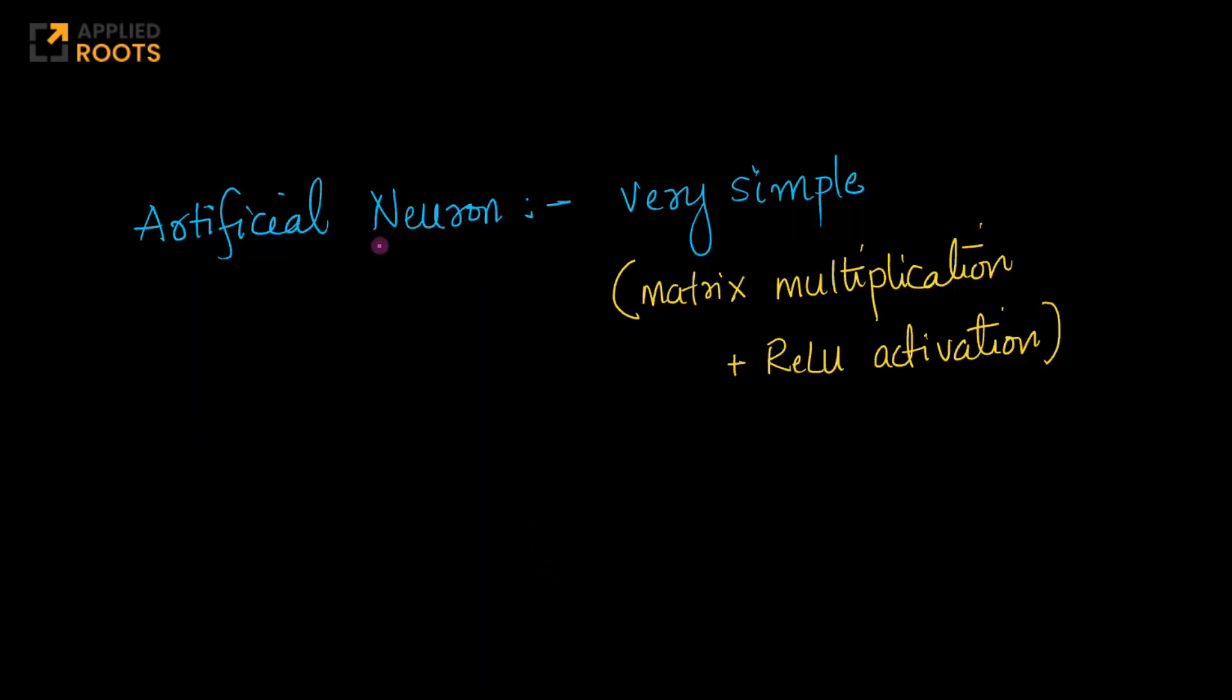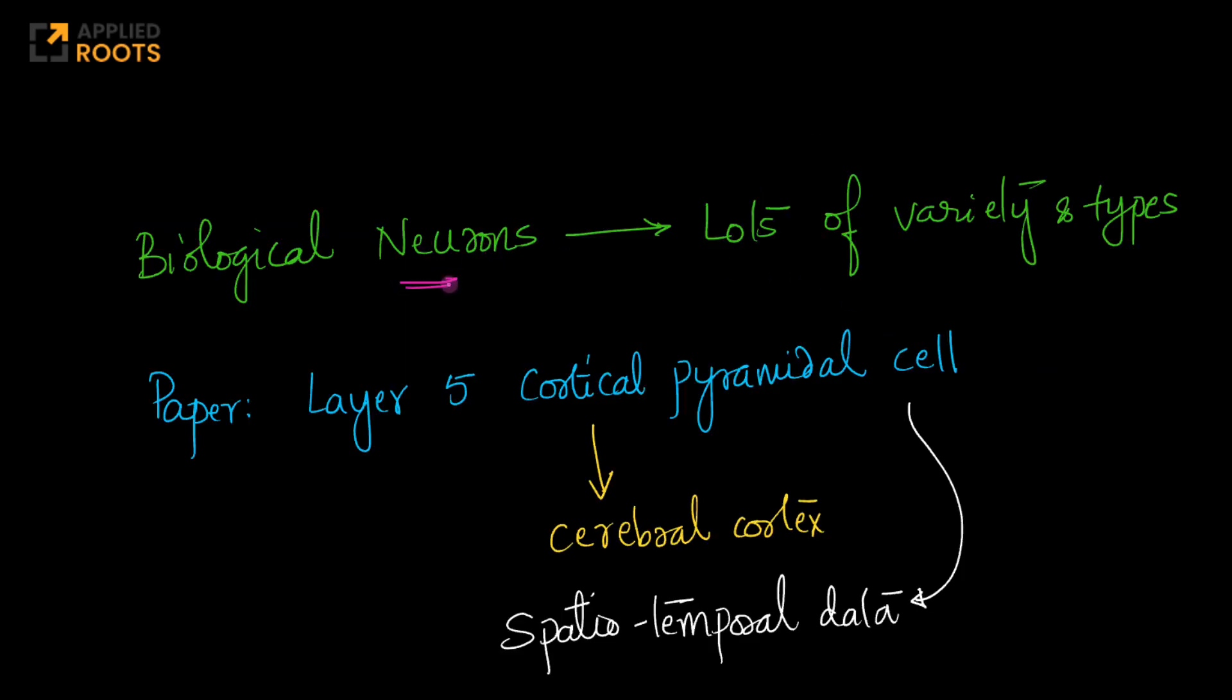Let's understand this. An artificial neuron that we often use in deep learning is a very simple structure. It involves a bunch of matrix multiplications and activation functions like ReLU. On the other hand, a biological neuron is fairly complex. In this research paper, they have taken something called a layer 5 cortical pyramidal cell, which is a non-trivial biological neuron. It is part of the cerebral cortex of humans and other mammals and processes spatiotemporal data.